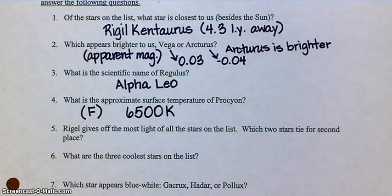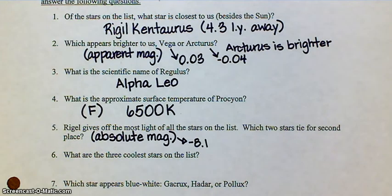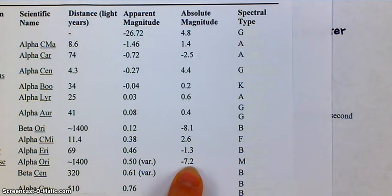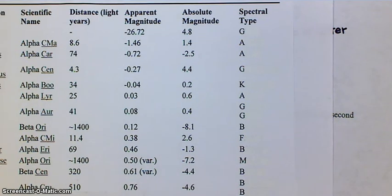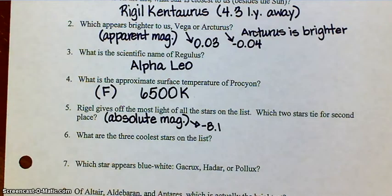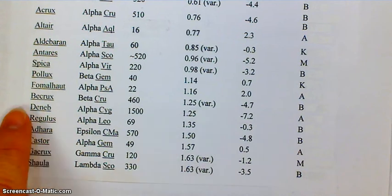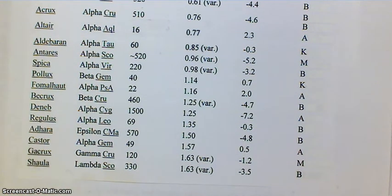Number five: Rigel gives off the most light of all the stars on the list. 'Gives off the most light' is talking about absolute magnitude. Rigel's absolute magnitude is negative 8.1. Which two stars tie for second place on the list? I need which ones have almost that big a negative number. There's negative 7.2, and that's about as close as we're going to get — so negative 7.2 is the second place winner. That is Betelgeuse, and if you can find another negative 7.2 further down — there it is — go over, and that's Deneb.